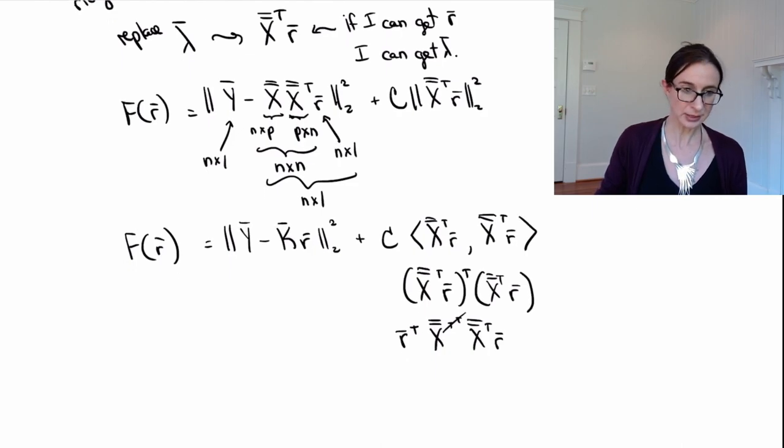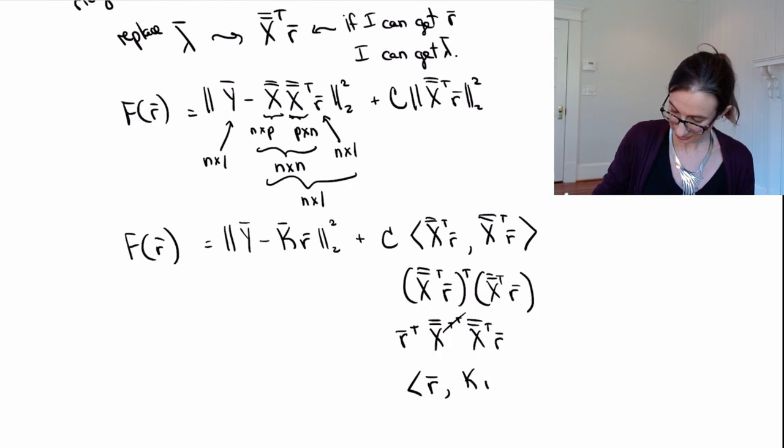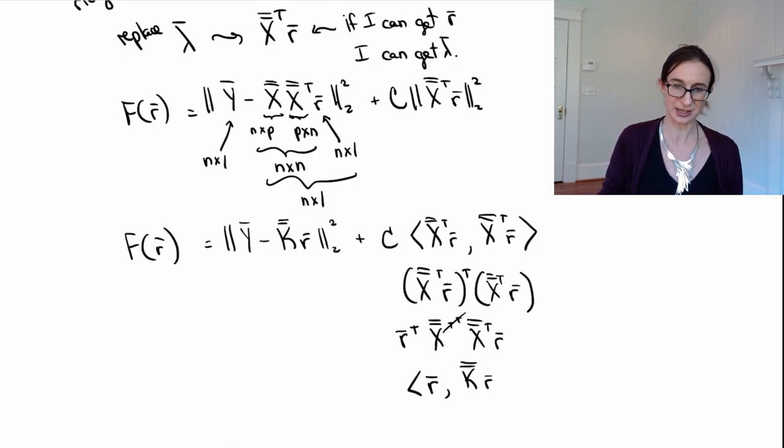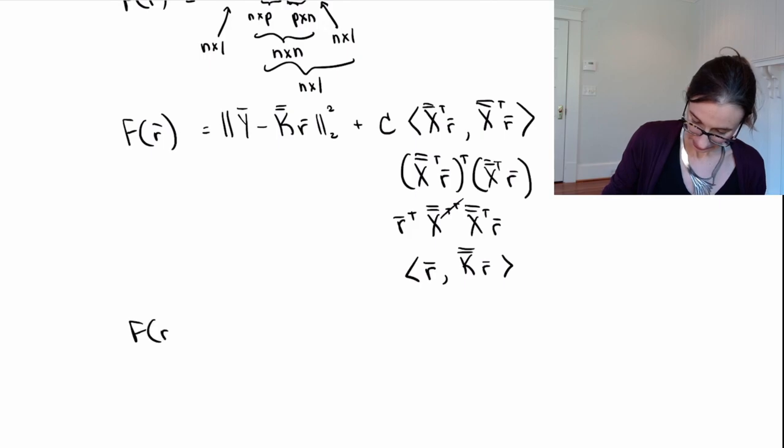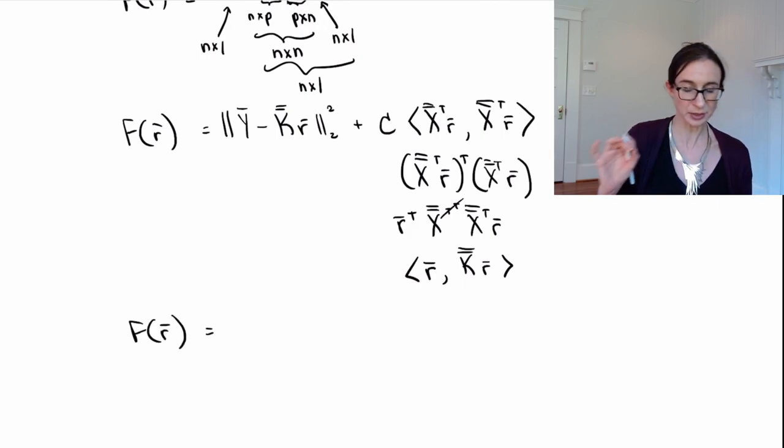And now guess what? What we have is the inner product of r with Kr. Because K gets to eat all of these, X gets to eat X, X transpose. Cool.